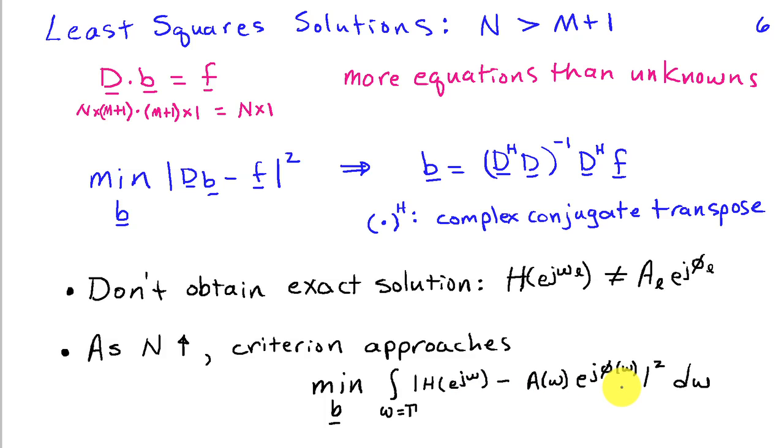One of the nice things about the frequency sampling design approach is that we can control the response of the filter at arbitrary frequencies, and we can set up any response that we want and easily solve for a filter that achieves that. The challenge is that there's no control of the response in between the frequencies that we specify, and if we specify a desired response that is not well suited to an FIR filter, we can get unusual behavior in between the frequencies, which leads to a not very useful design.